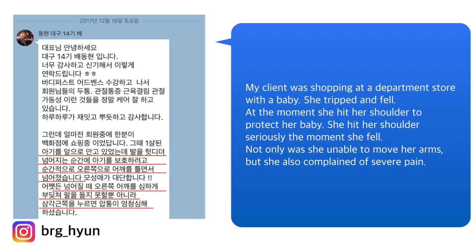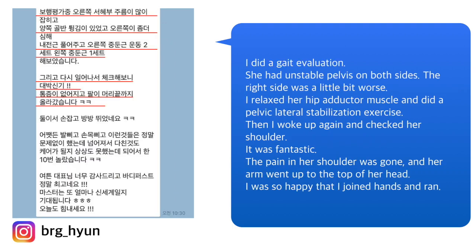Another client was shopping at a department store with her baby when she was treated unfairly. In that moment she hit her shoulder to protect her baby — she hit it seriously and was unable to move her arm, also complaining of severe pain. I did a gait evaluation. She had unstable pelvis on both sides, the right side a little worse. I relaxed her hip adductor muscle and did a pelvic lateral stabilization exercise. Then I checked her shoulder again — it was fantastic. The pain was gone and her arm went up to the top of her head.